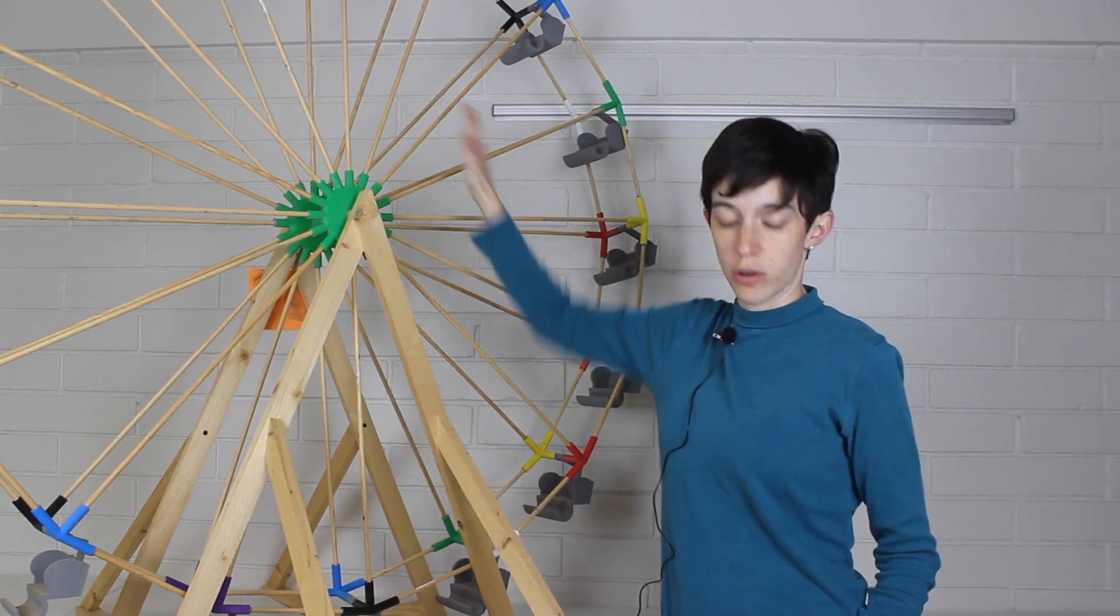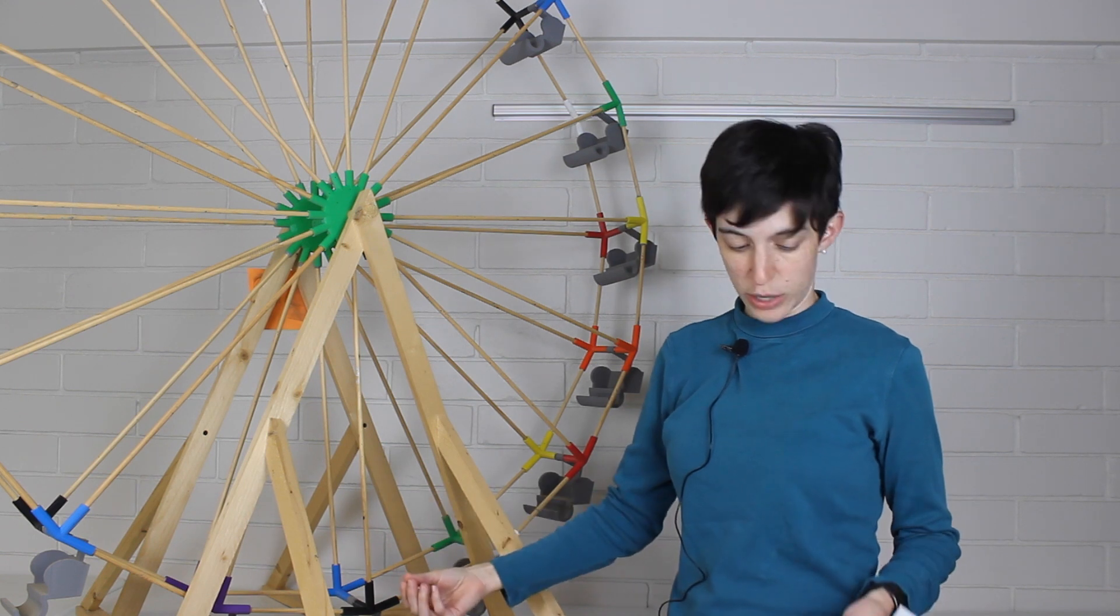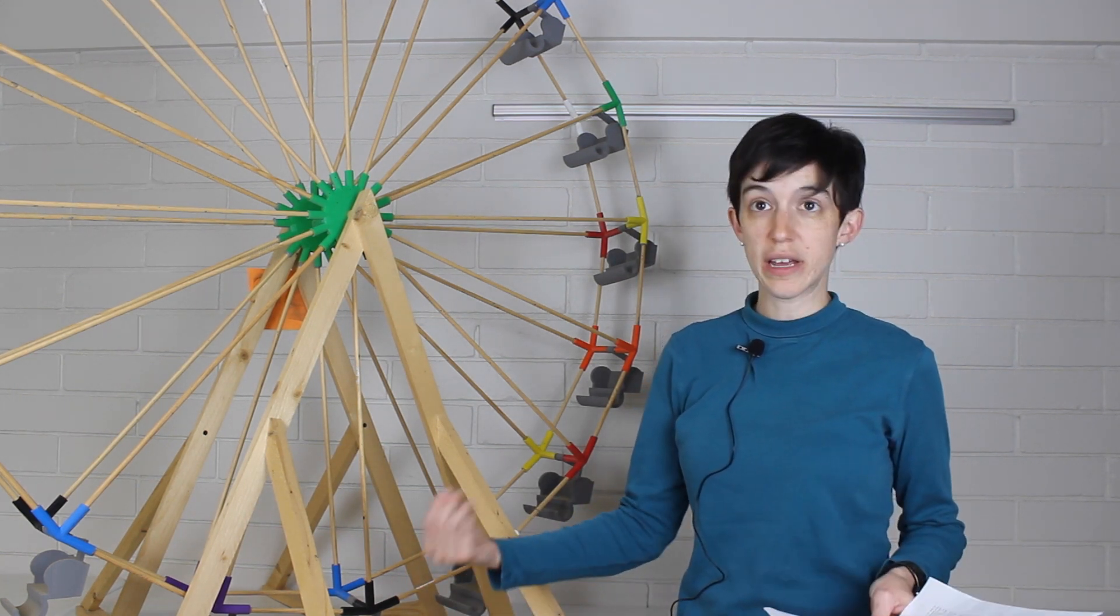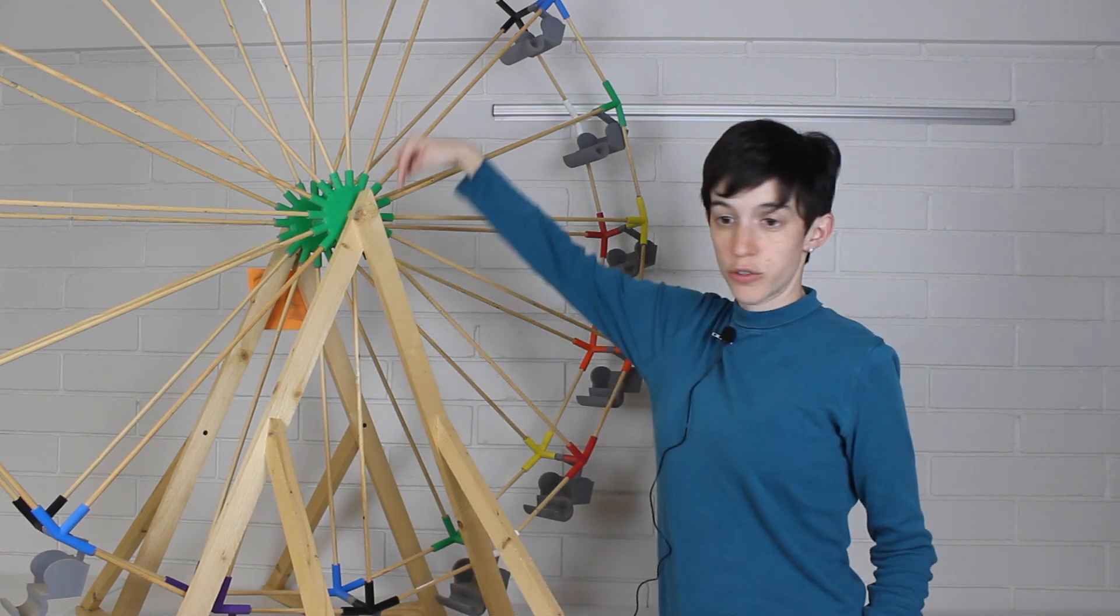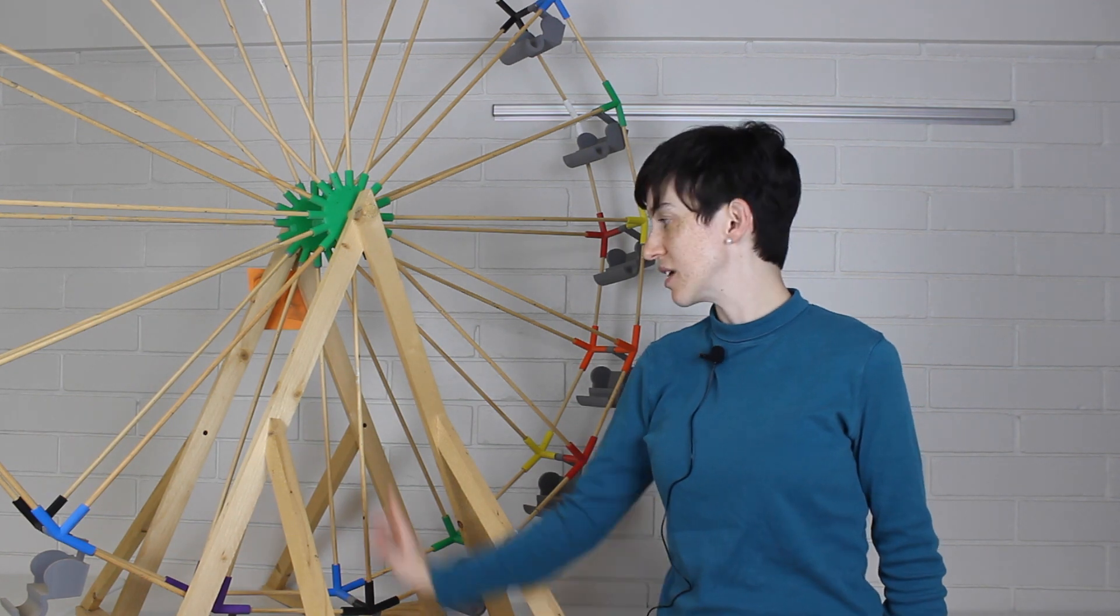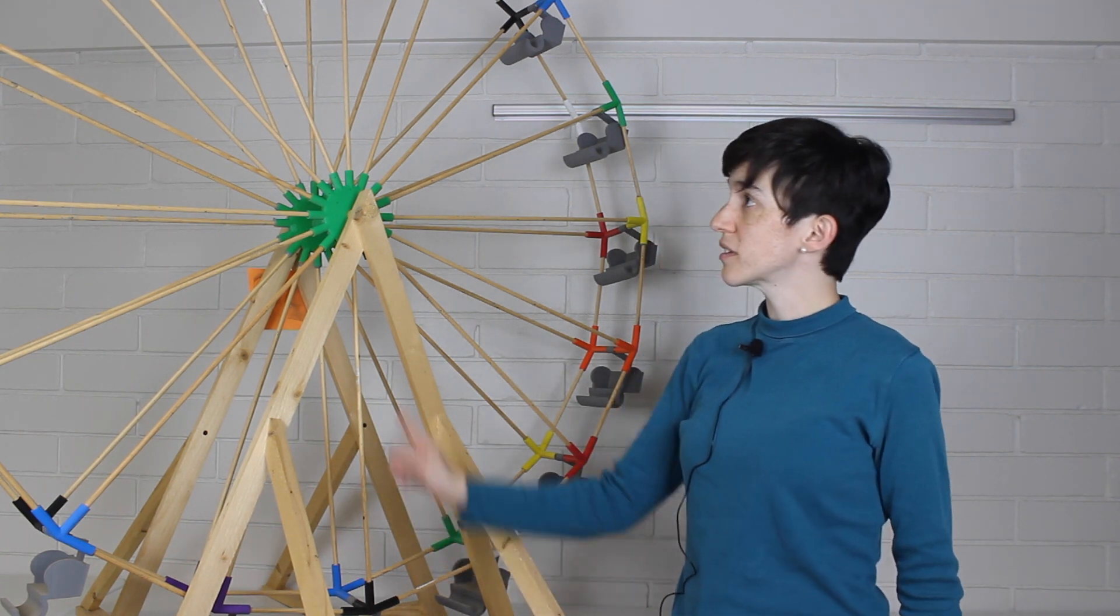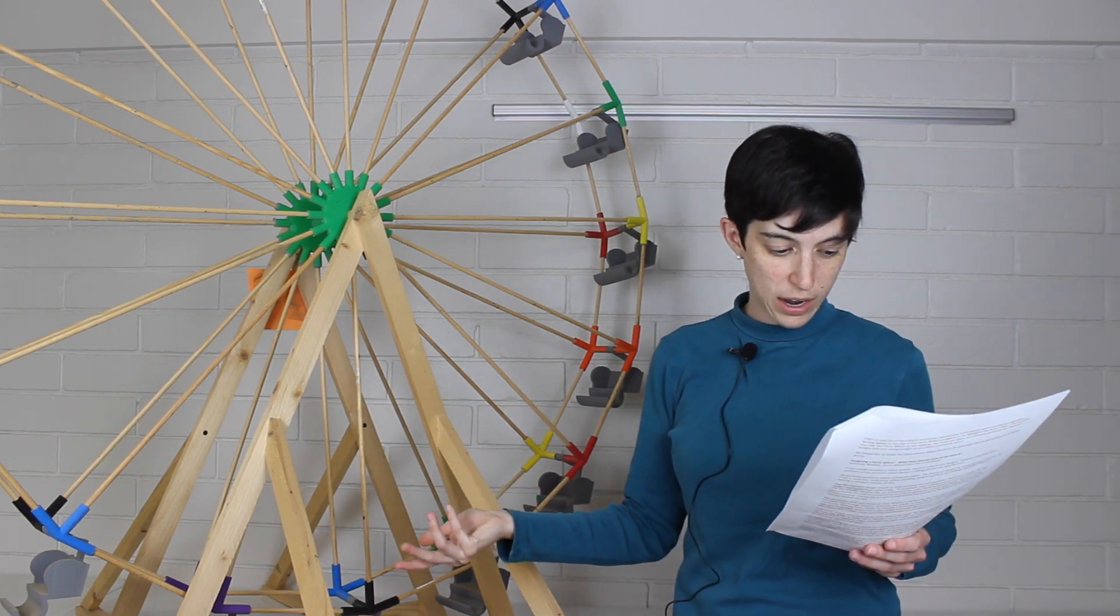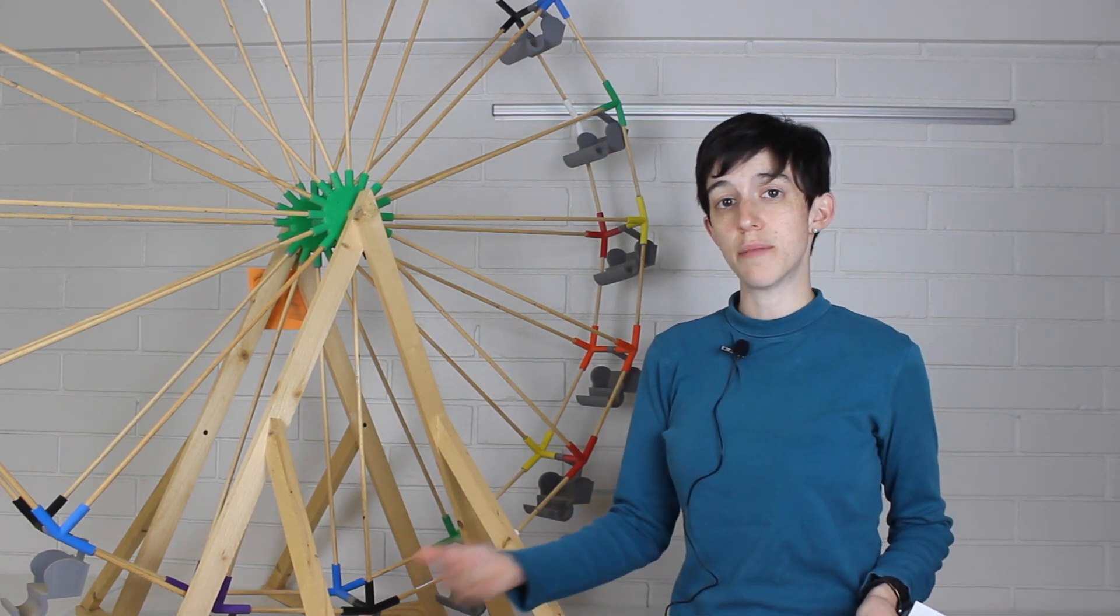When you're at the top of the Ferris wheel, the centripetal acceleration, or the force that keeps a smaller object orbiting a bigger object, is pointing directly down. When you're at the bottom of the wheel, the centripetal acceleration is facing up. The force that you feel at the top of the wheel is called F1. F1 is calculated mass times gravity minus acceleration.